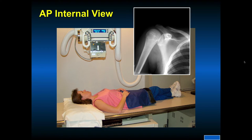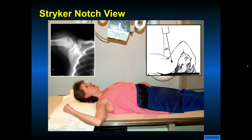These plain views: an AP view in internal rotation shows the position of the patient and what the x-ray looks like. The Stryker notch view is a very good view to look at the glenoid. You can see thrower's exostosis in the back inferiorly. You can also visualize the acromioclavicular joint very nicely, as well as the proximal humeral epiphyseal plate — in this patient, it is closed.